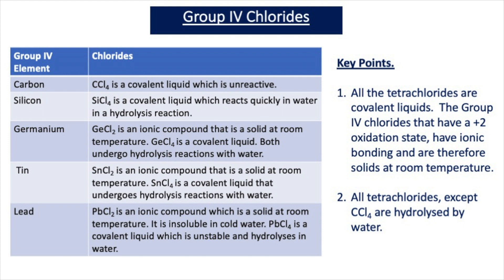From this table there are a number of key points you should be aware of. First of all, all the tetrachlorides — where the group 4 element is in a plus 4 oxidation state — are covalent liquids. The group 4 chlorides that have a plus 2 oxidation state have ionic bonding and are therefore solids at room temperature.